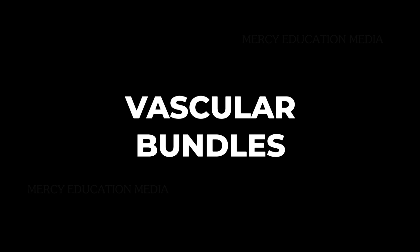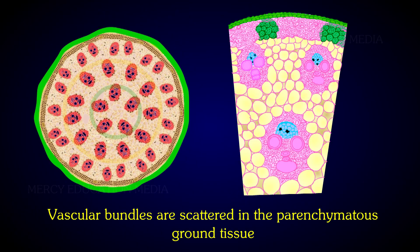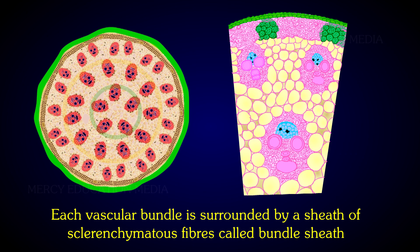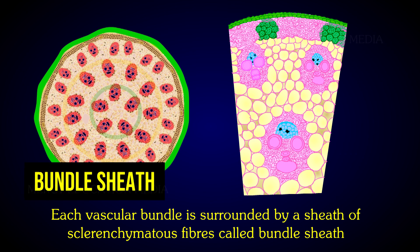What do you know about vascular bundles? Vascular bundles are scattered in the parenchymatous ground tissue. Each vascular bundle is surrounded by a sheet of sclerenchymatous fibers called bundle sheath. The vascular bundles are conjoint, collateral, endarch, and closed.